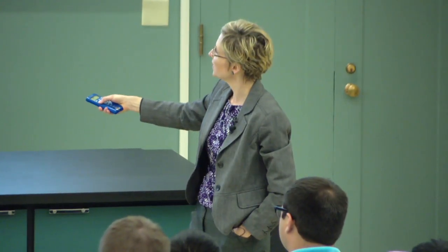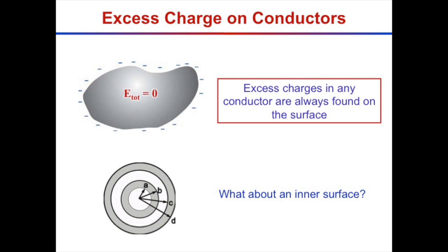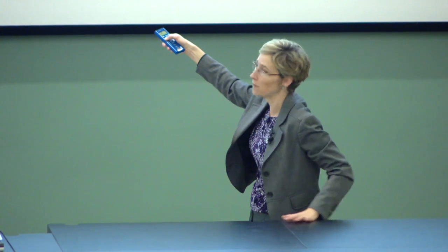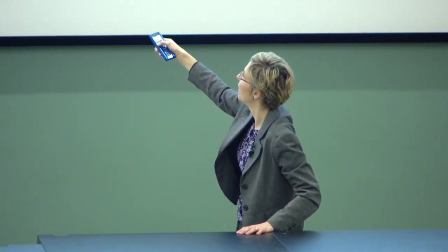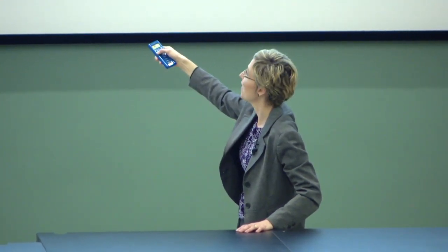If a hollow spherical conductor surrounds another hollow spherical conductor, and you place a proton in the middle, the electrons in the inner conductor are attracted inside, giving a net negative charge on the inner wall and exposing positive charge outside. That then polarizes the outer conductor the same way. In equilibrium, the interior of the conductor still has zero net electric field.